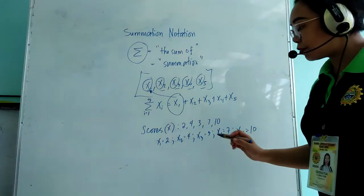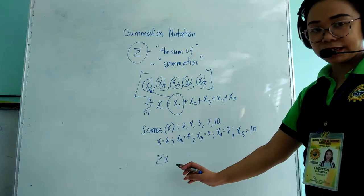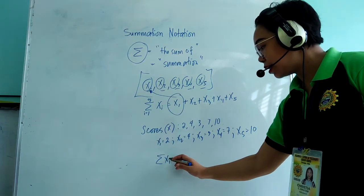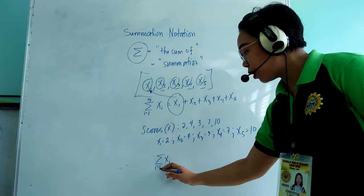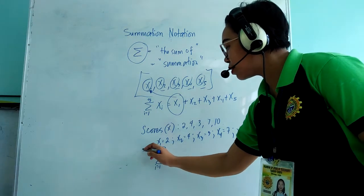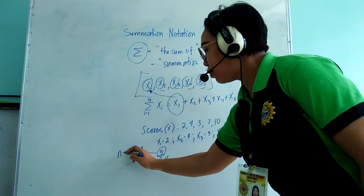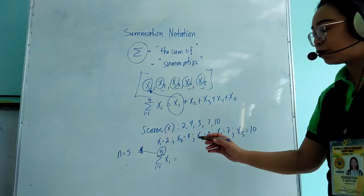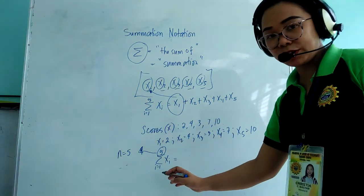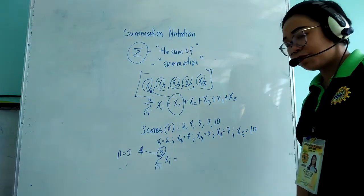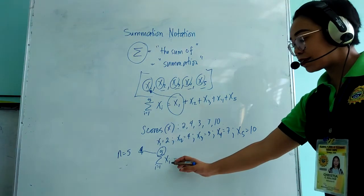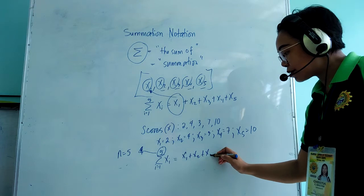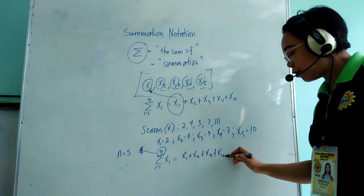If you want to get the sum of those scores and write it in summation notation form, you will write the sum of xᵢ, i from 1 to 5 — 5 because your n equals 5. Before you can solve the sum, you have to write the summation notation into its expanded form. The expanded form of Σxᵢ from i=1 to 5 is x₁ + x₂ + x₃ + x₄ + x₅.